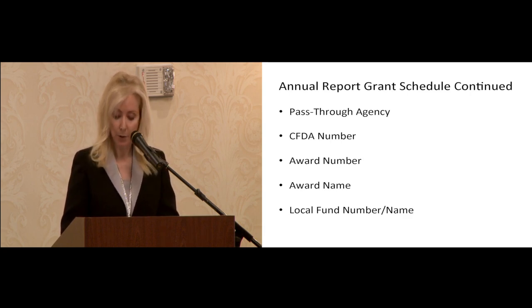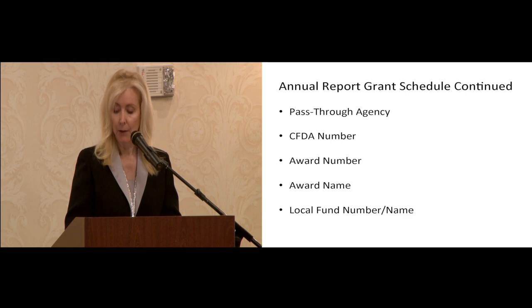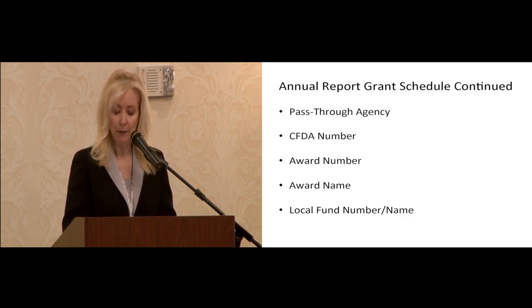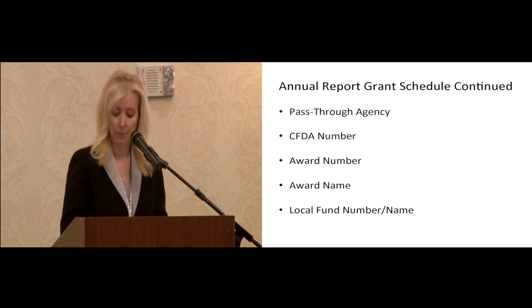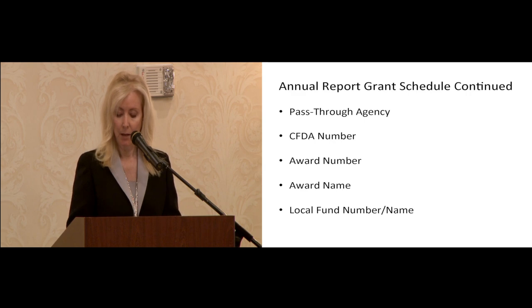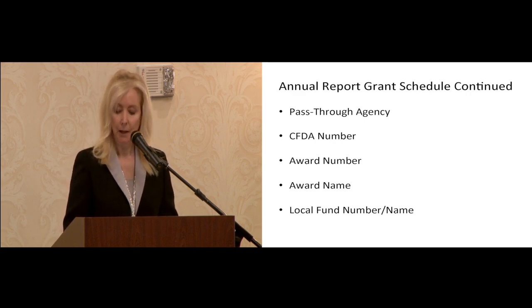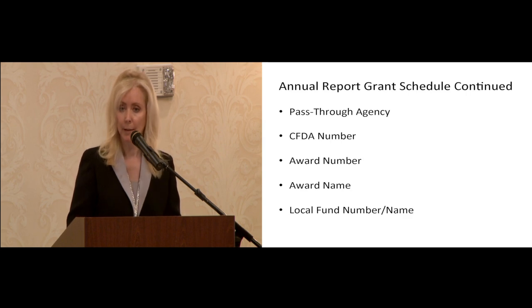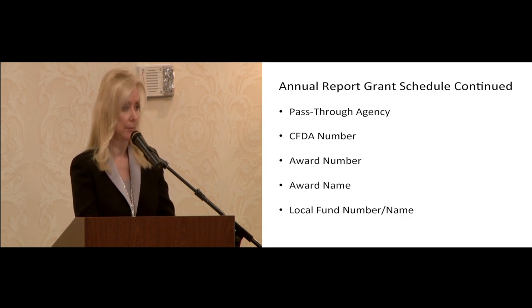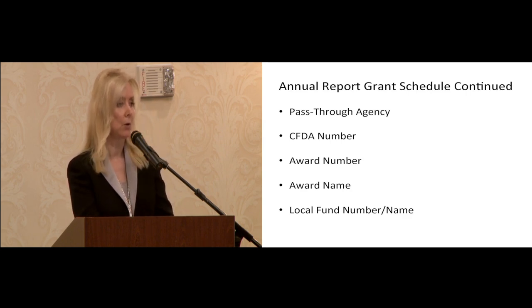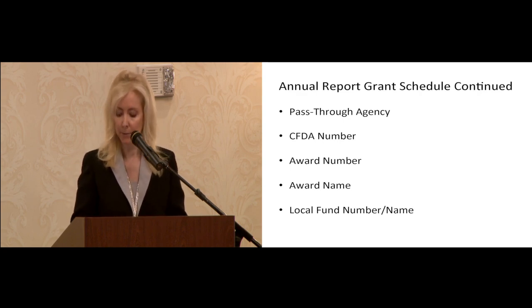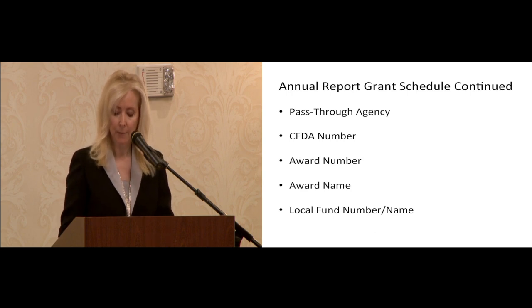You'll need the award number — this is the number that the awarding agency has assigned to your grant, and it should be in the award letter. But some grants do not have an award number, such as Title IV-D. If that's the case, you'll just leave this blank. Likewise with award name — sometimes they just maintain whatever the federal program name is and don't have a separate name, and if that's the case, leave that blank.